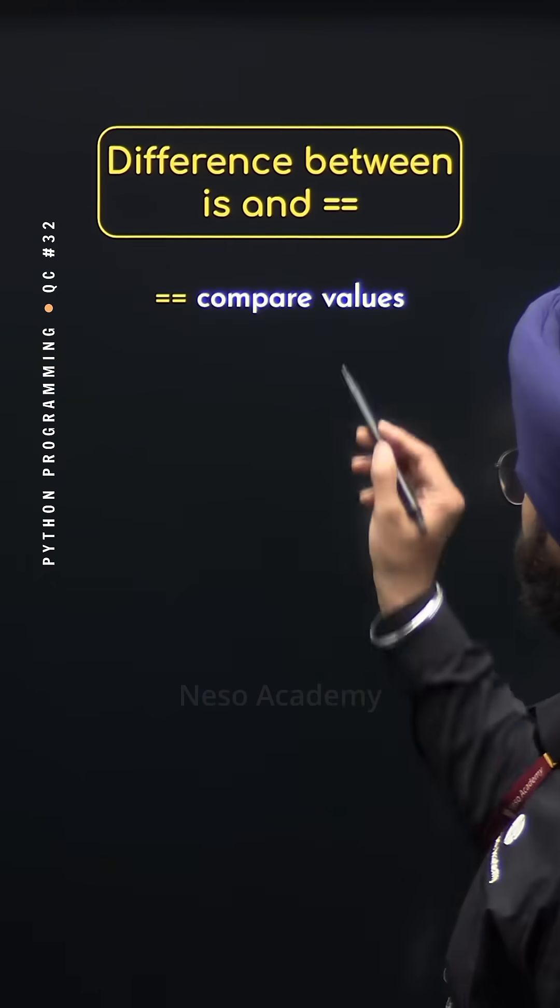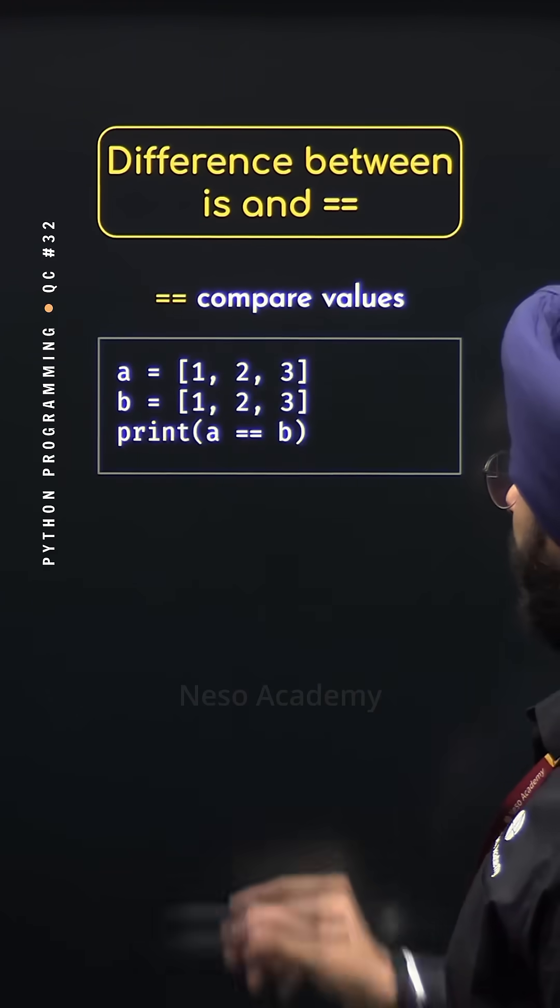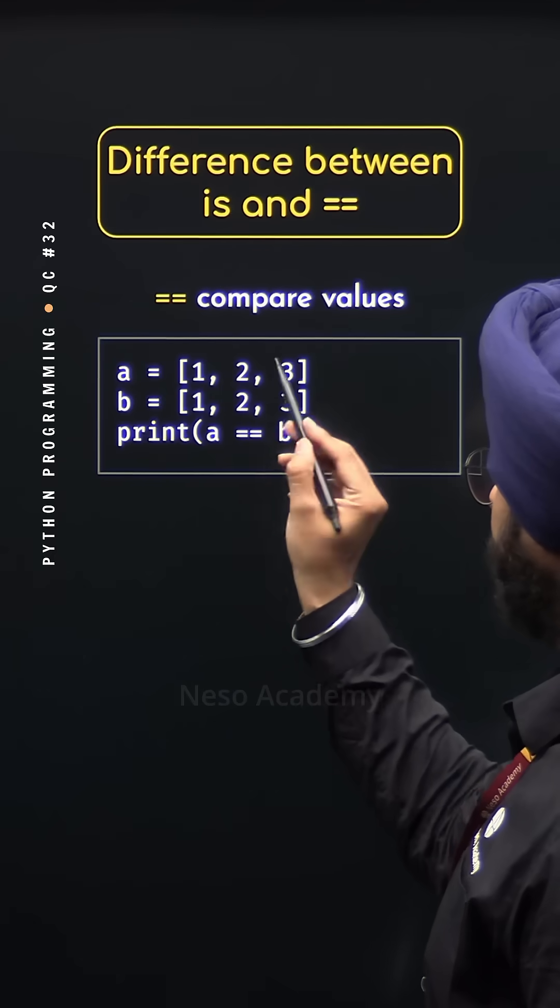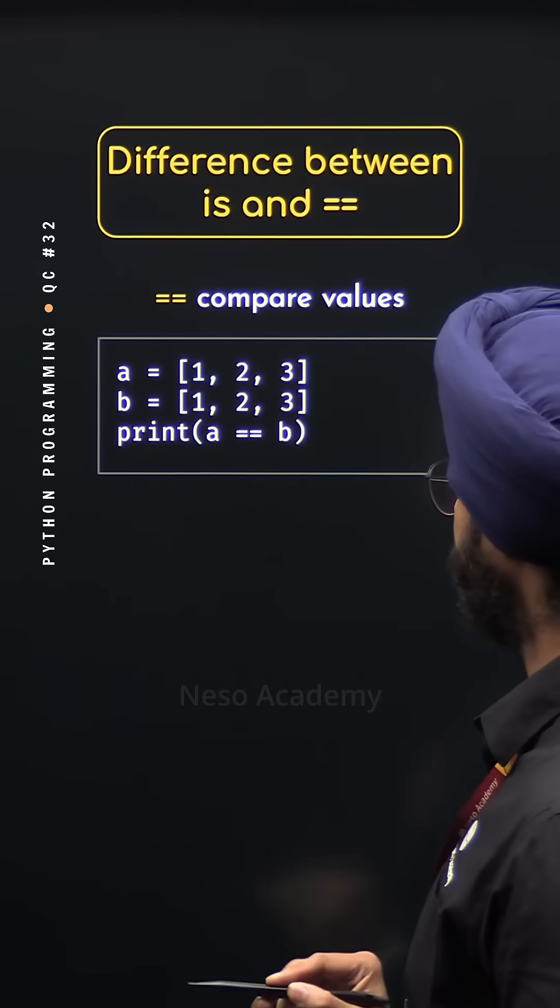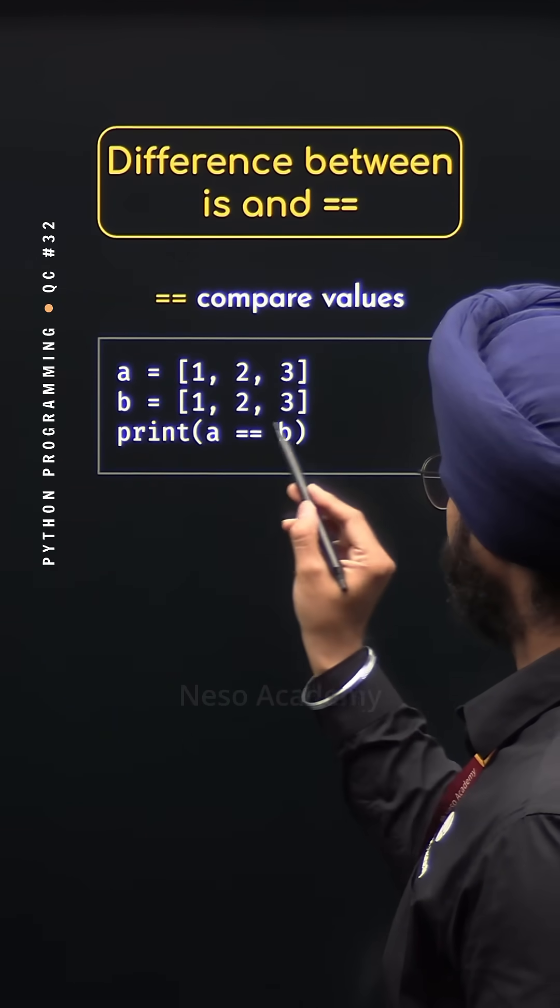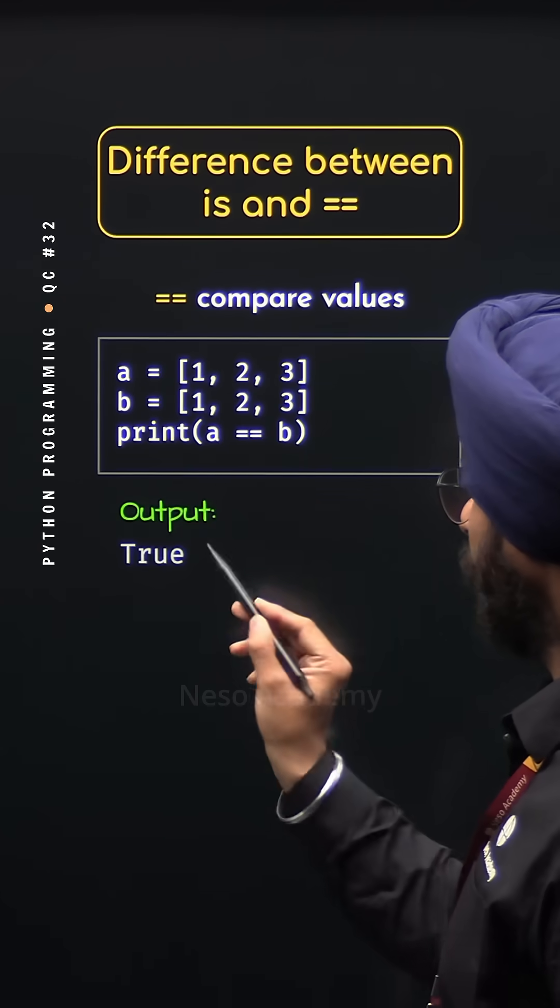The equality operator is used to compare values. For example, A is pointing to this list with three items 1, 2, and 3, and B is pointing to this list with the same items. Now, if you try to print the result of A equal to B, we will get true as the result.